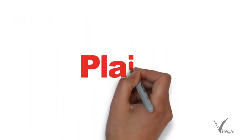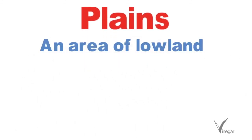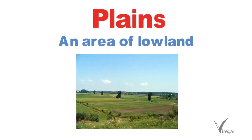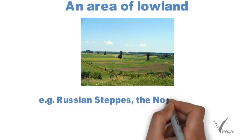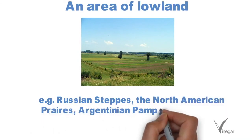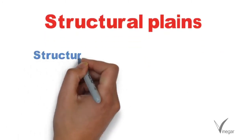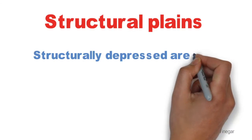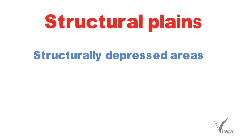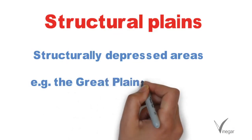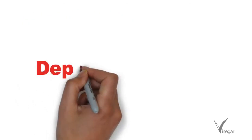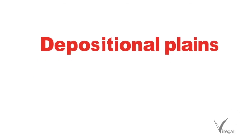Let's talk about plains. A plain is an area of low land — it may be level or undulating or irregular. It may have low hills with a sort of curved surface. Examples of plains are the Russian Steppes, North American Prairies, and Argentinian Pampas. The first type is structural plains — these are structurally depressed areas of the world and include some of the largest lowlands, such as the Great Plains of the USA or the Central Lowlands of Australia.